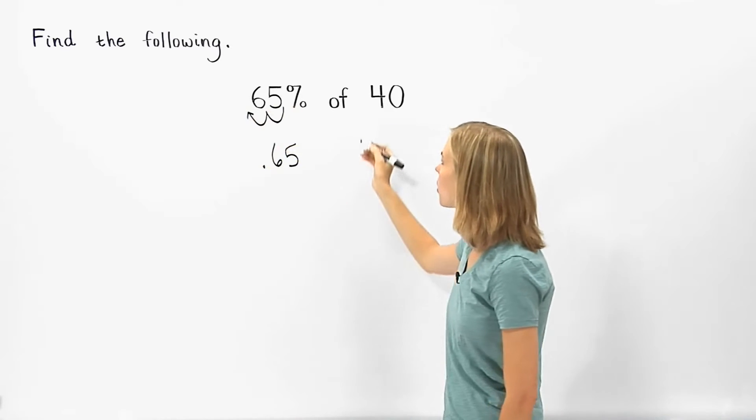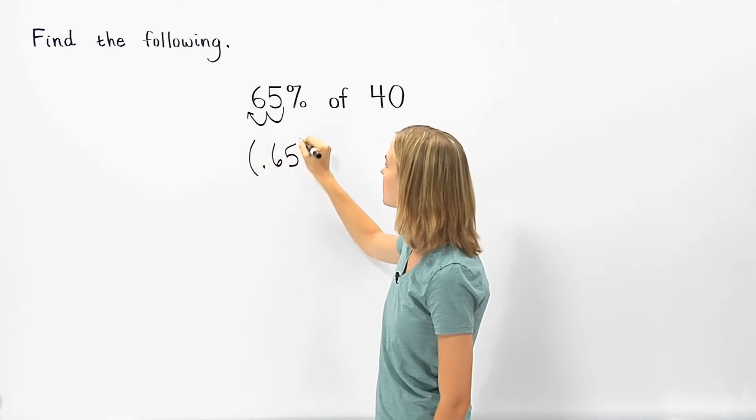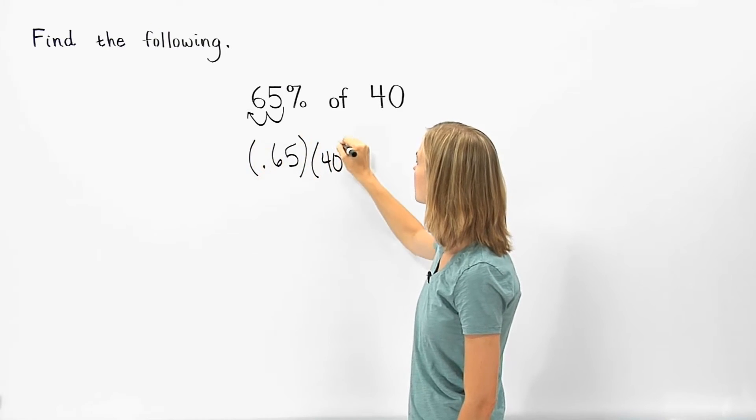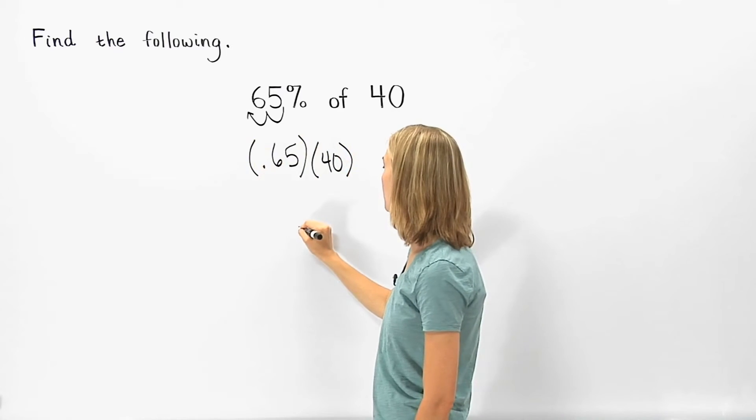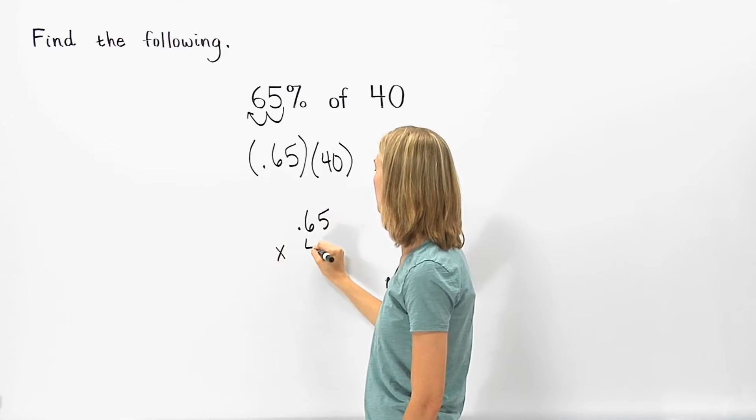Next, the word of tells us to multiply, so we multiply 0.65 times 40. Setting up this multiplication problem, we have 0.65 times 40.